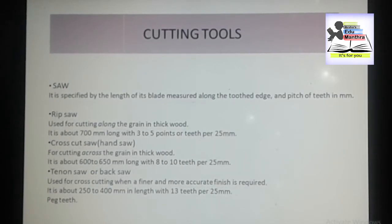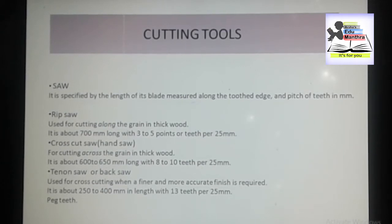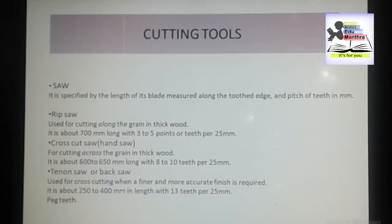The rip saw is fitted in a wooden handle made of hardwood by means of rivets or screws. Rip saws are about 700 mm long with three to five points or teeth per 25 mm.